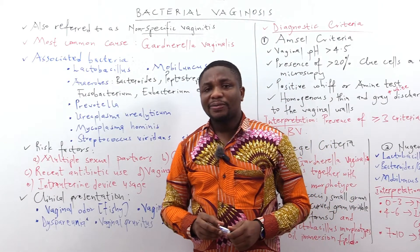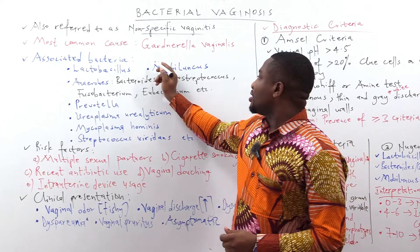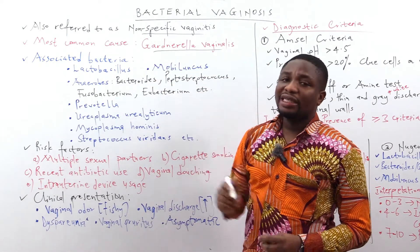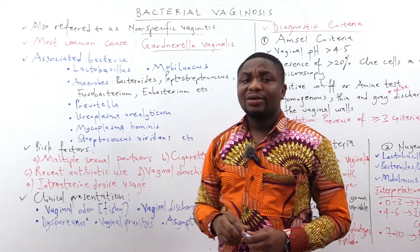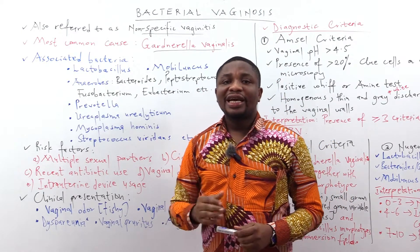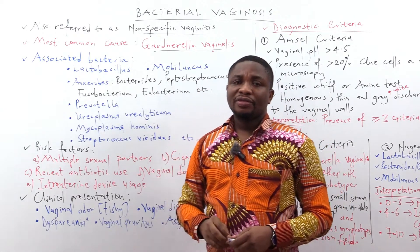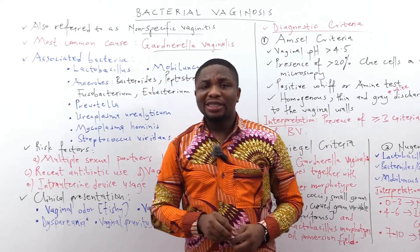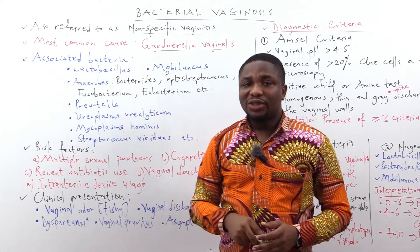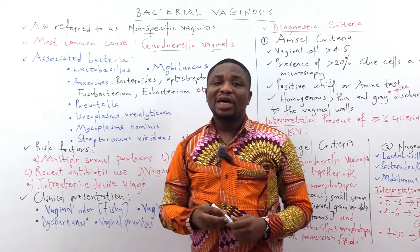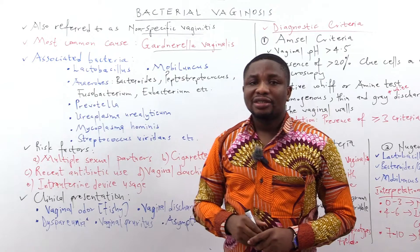Bacterial vaginosis is mostly caused by Gardnerella vaginalis. It is not the only organism involved, but it is the most dominant bacteria. Because several microorganisms are involved, bacterial vaginosis is referred to as a polymicrobial synergistic infection.